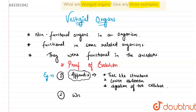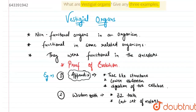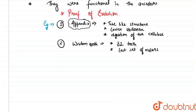The second example is the wisdom tooth. Humans have 32 teeth, and out of these 32, the last set of molars are called the wisdom tooth. These are considered to be a vestigial organ because they are non-functional. They were present in our ancestors due to their different feeding habits — our ancestors had very different feeding habits and were eating raw food such as raw meat.